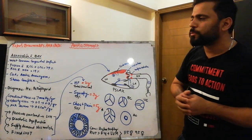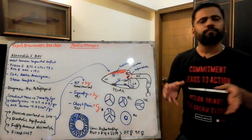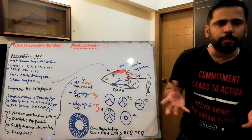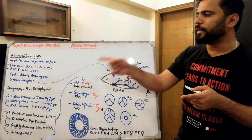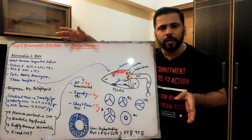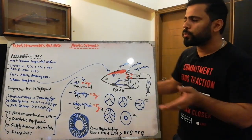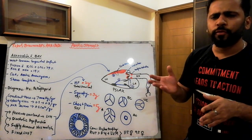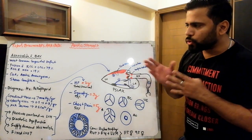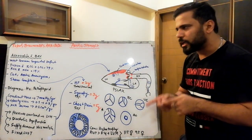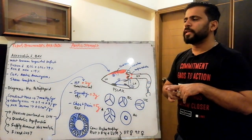Bicuspid aortic valve is caused by fusion of two cusps. The most common fusion is between the right coronary cusp and the left coronary cusp, occurring in approximately 79% of cases. In 19% of cases, the right coronary cusp fuses with the non-coronary cusp. The remaining fusions account for around 1–2% of the population.